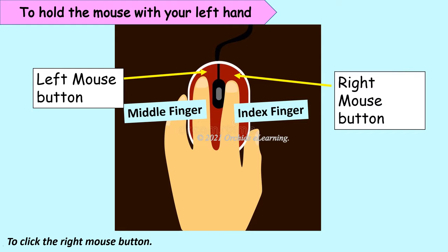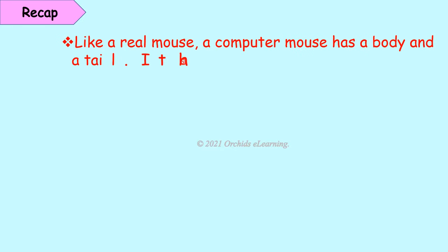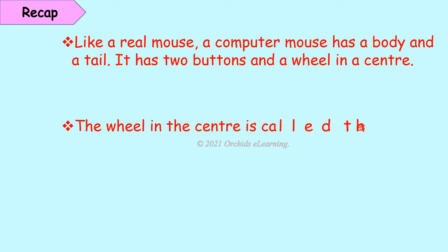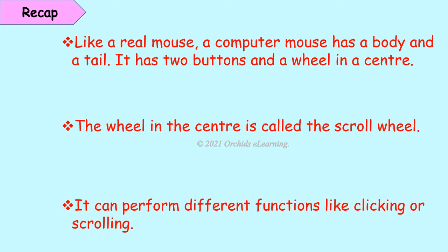Recap: Like a real mouse, a computer mouse has a body and a tail. It has two buttons and a wheel in the center. The wheel in the center is called the scroll wheel. It can perform different functions like clicking or scrolling.